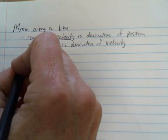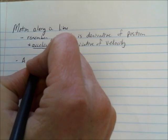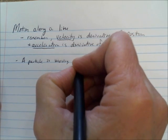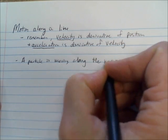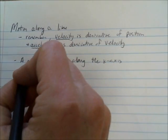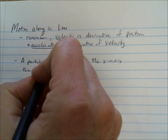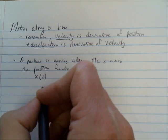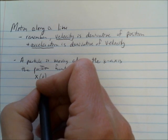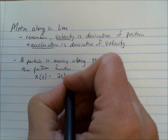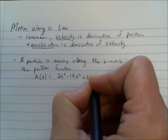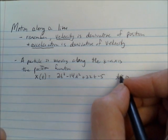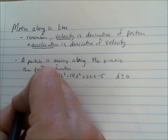A particle is moving along a line — along the x-axis, let's say. The position function, which we'll call x of t because it's going to be moving along the x-axis, will have an x value at any time t. Let's say x of t is equal to 2t cubed minus 14t squared plus 22t minus 5, and all the t values are going to be positive or zero. We're going to find the velocity and acceleration and describe the motion of the particle.